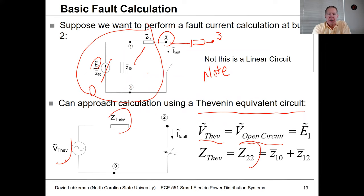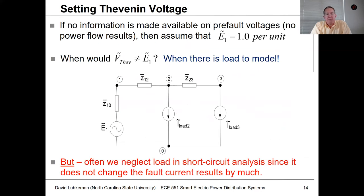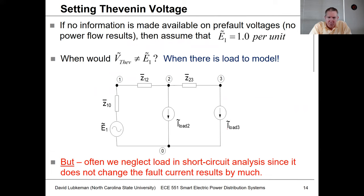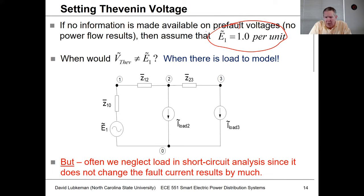The fault current is simply the Thevenin voltage divided by the Thevenin impedance. For more complex examples, the Thevenin voltage would normally come from running a power flow first. If you don't have a power flow result, a common practice is to assume the pre-fault voltage is at nominal — one per unit — either working in per unit or using nominal line-to-neutral voltage in ohms.